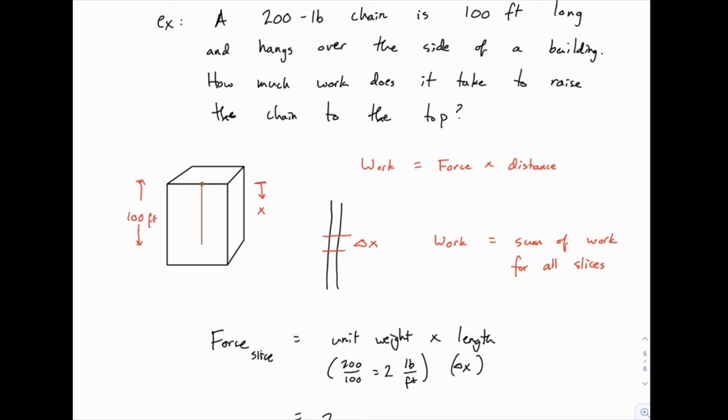So in other words, up here, x equals 0, and down at the bottom of the chain, x equals 100, halfway between x equals 50, and so on. So it's like we're turning our coordinate system sideways, but we're measuring x downward, and starting at the top.